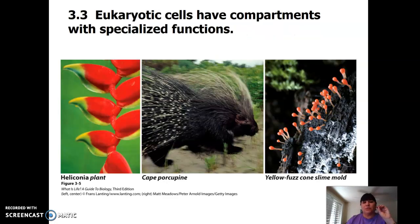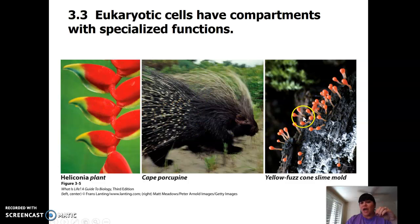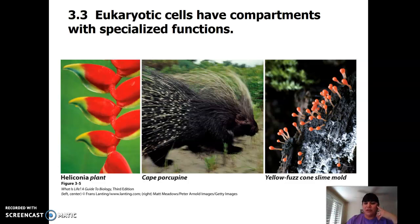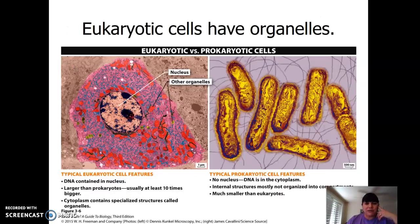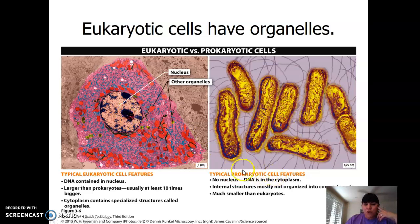We can have single-celled organisms that are prokaryotic. Eukaryotic — true kernel — plants, animals, and fungi have eukaryotic cells. The biggie is there's a nucleus, and the nucleus has DNA. Here's a really nice picture comparing prokaryotic cells to eukaryotic cells. Eukaryote means true kernel — the DNA is inside.